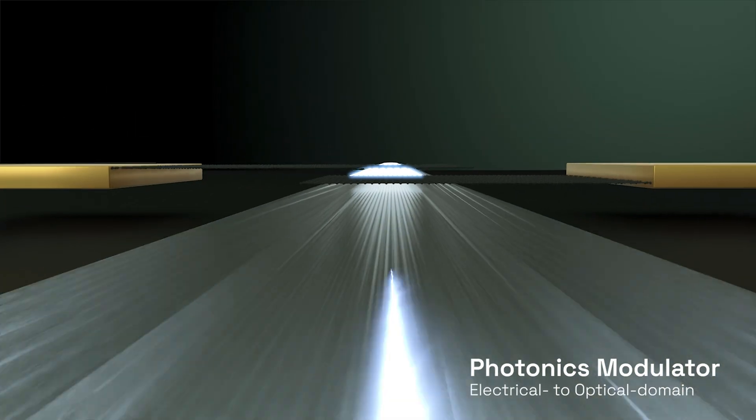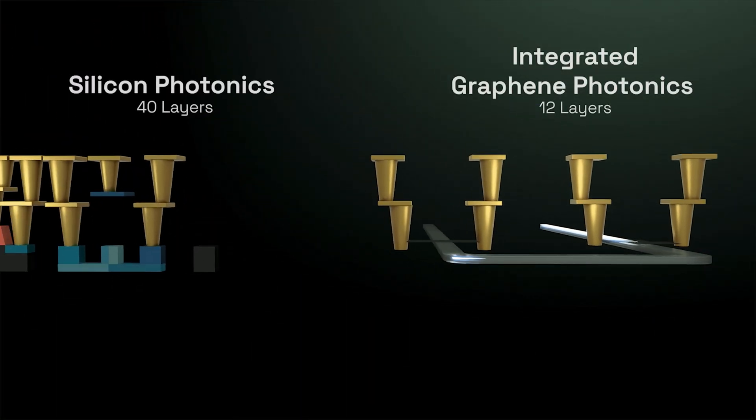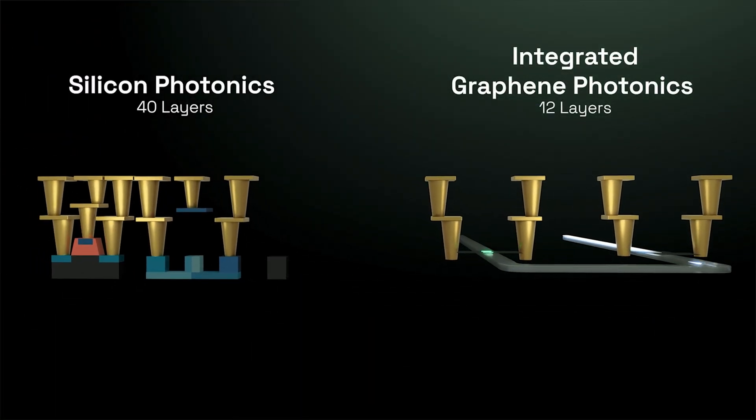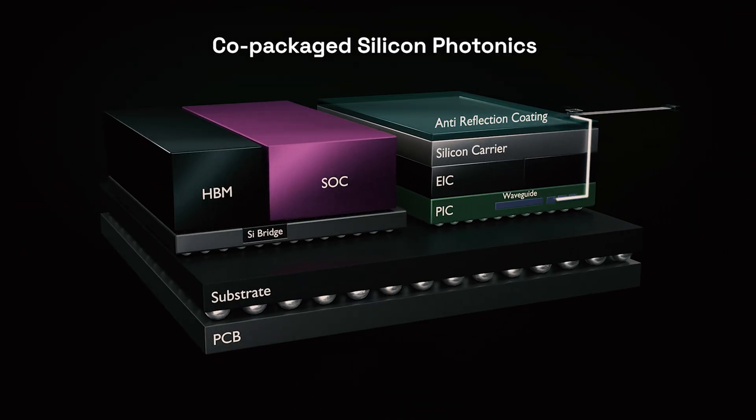By adding graphene on top of a passive silicon nitride waveguide, we match the functionality of silicon photonics while achieving a 4x boost in performance.